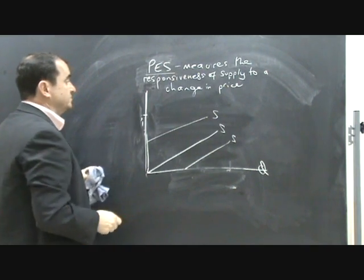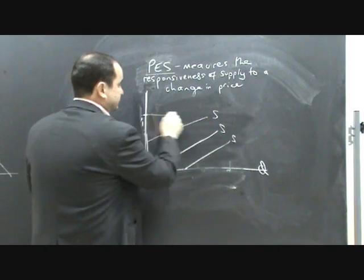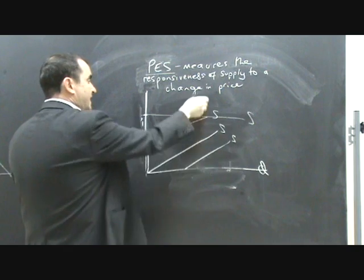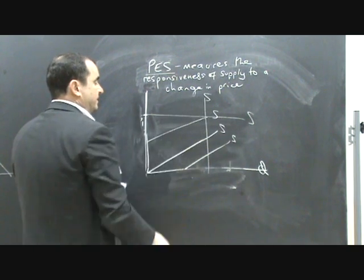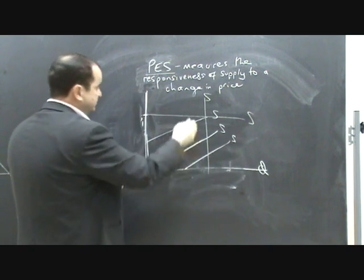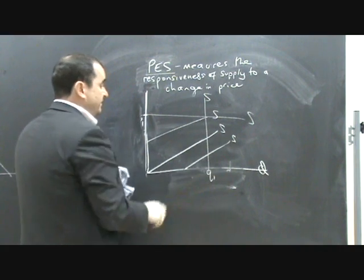Now, there are two extremes. There is the perfectly elastic supply curve, which is horizontal, and there is a perfectly inelastic supply curve, which is vertical, meaning the price changes, supply remains at Q. There is no reaction.